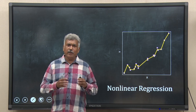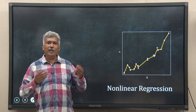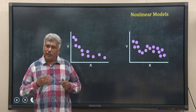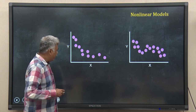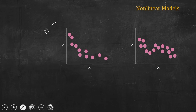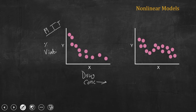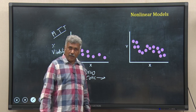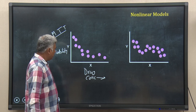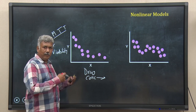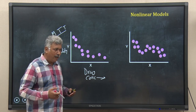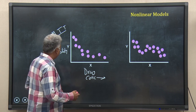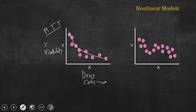But life is not so simple. Many a time, although we wish that the data should have a linear relationship between variables, the data will have a non-linear relationship. For example, take this MTT data. You have drug concentration on the horizontal axis and percentage viability of cells. Suppose you are assaying the drug toxicity — the viability of cells is on the vertical axis. You can easily see we have a non-linear decay type relationship between these two variables.